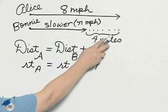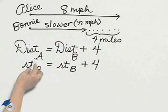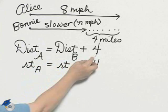After a while, they are 4 miles apart. At that point, the distance of Alice is equal to the distance of Bonnie plus those 4 miles.